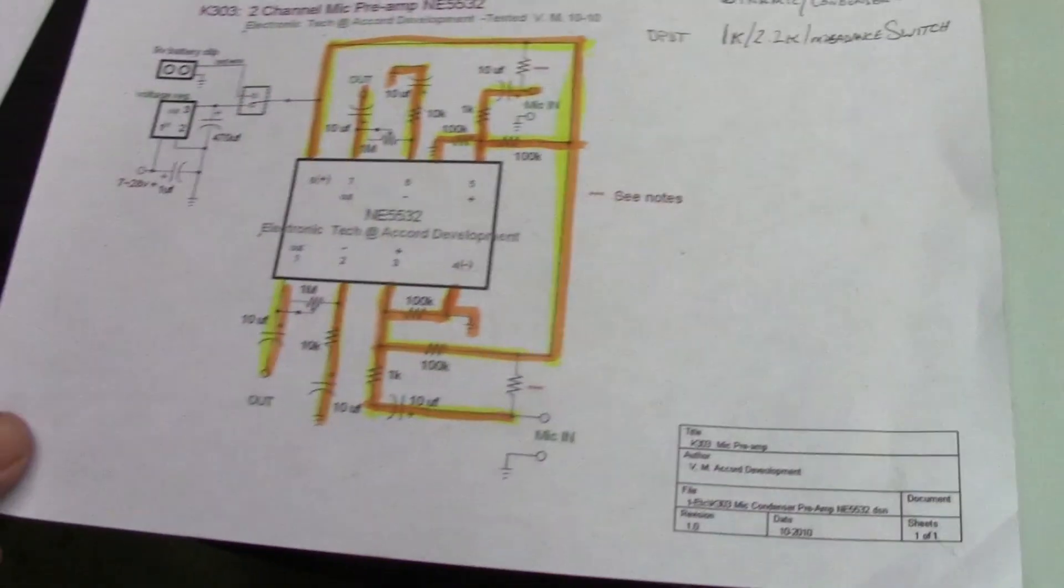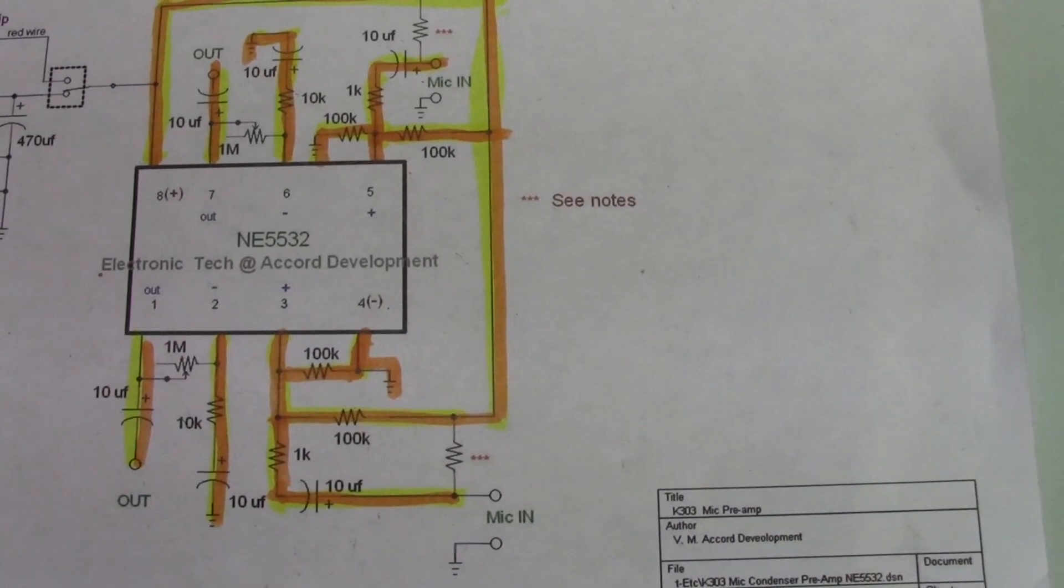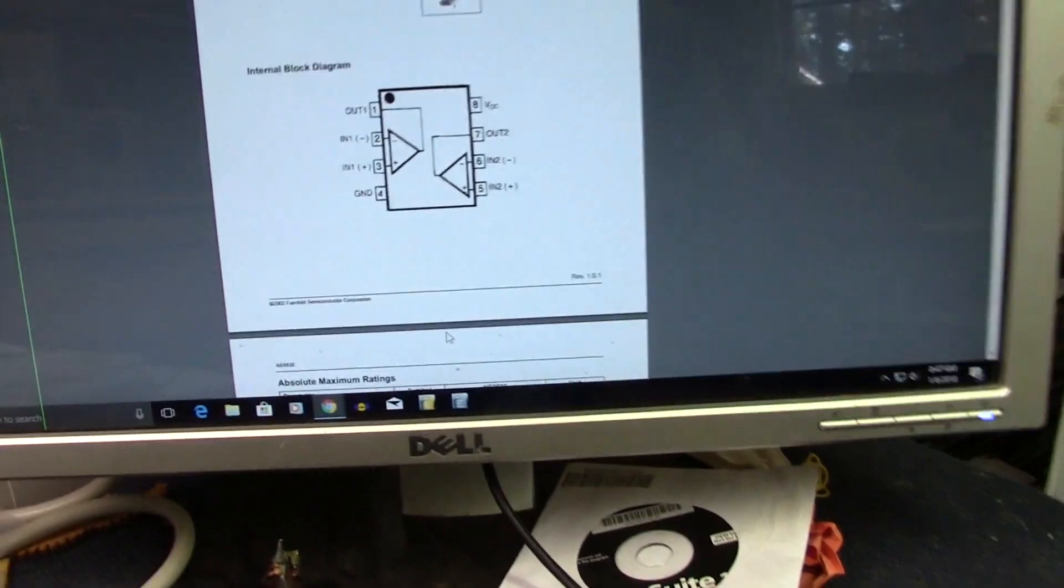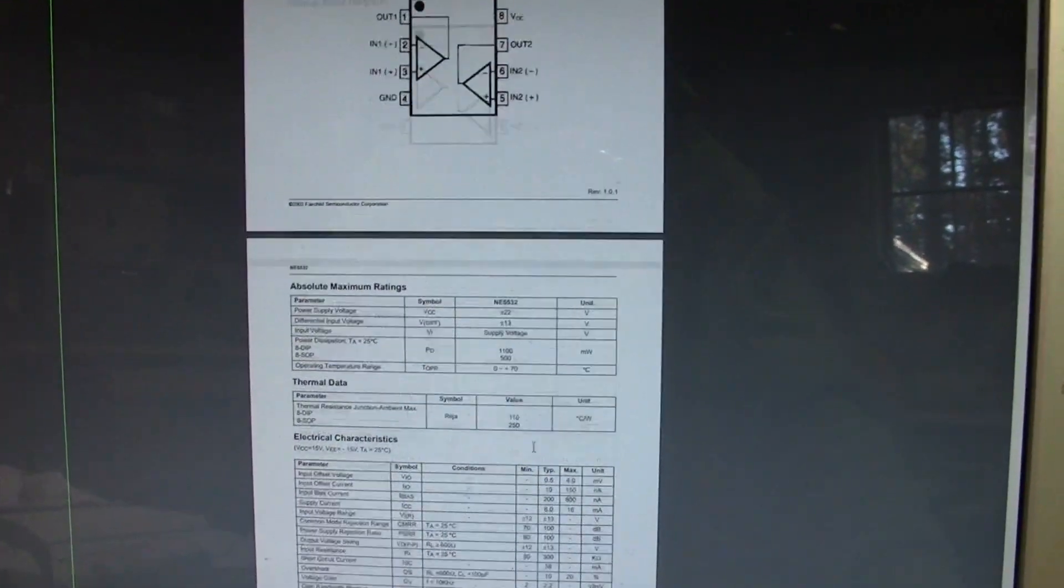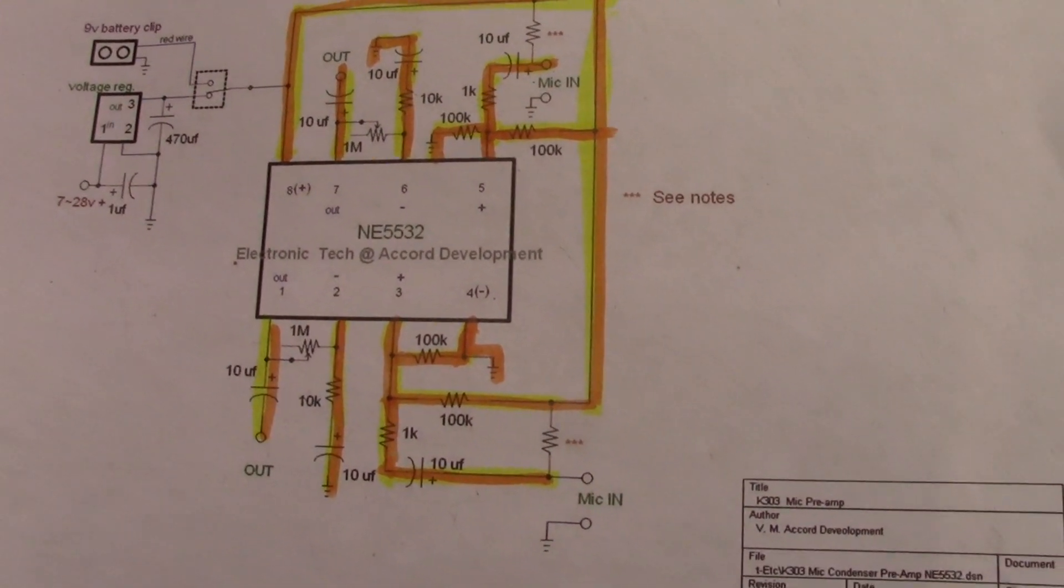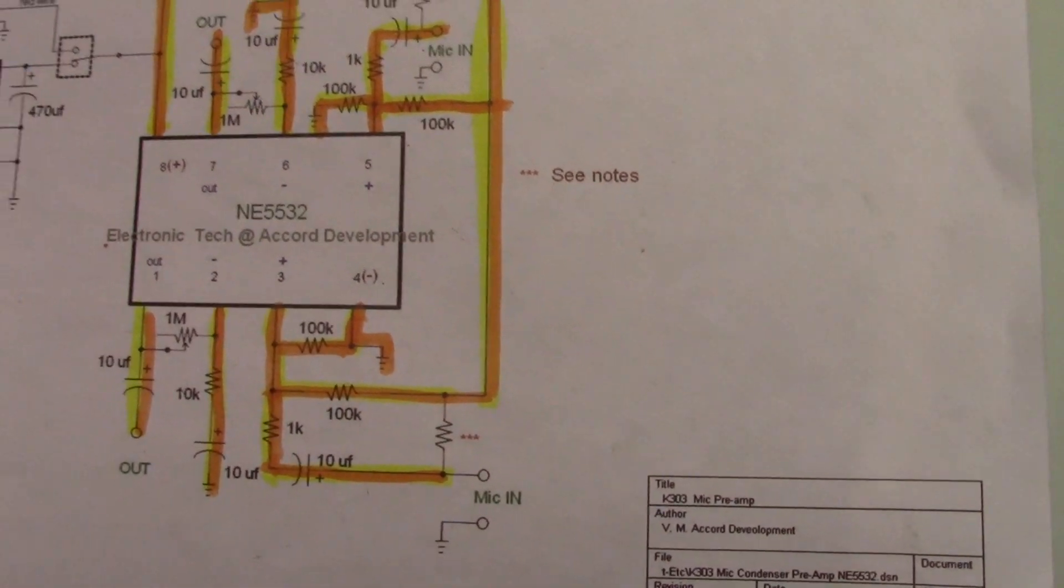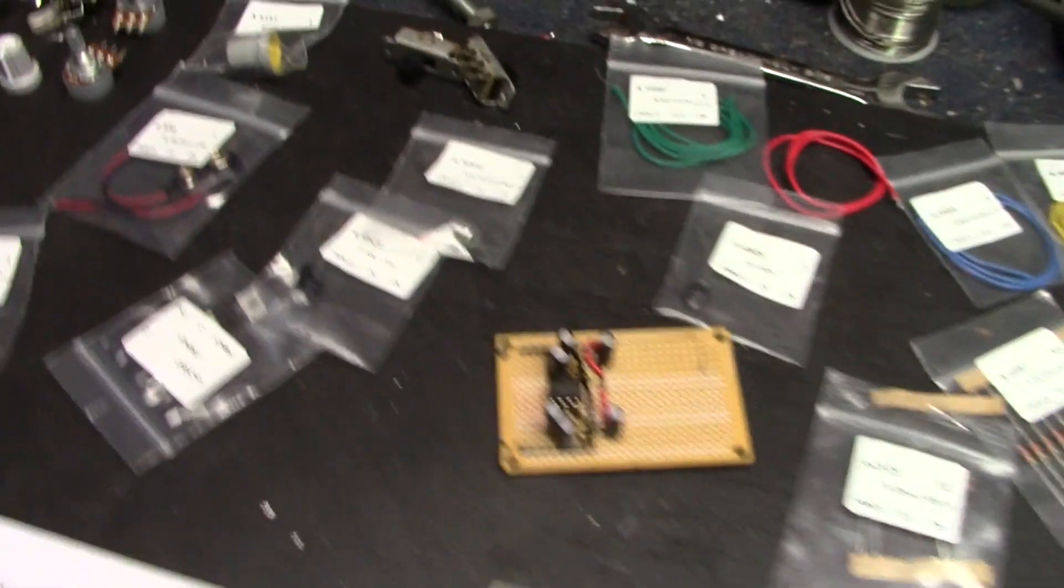And here is the schematic. It's a dual operational amplifier that is based on an NE5532. There's the data sheet for that. It's just a dual op amp. Anyway, there's the schematic. A few RC filters here and there and a couple of pots and input output jack switches and bam, we're there.